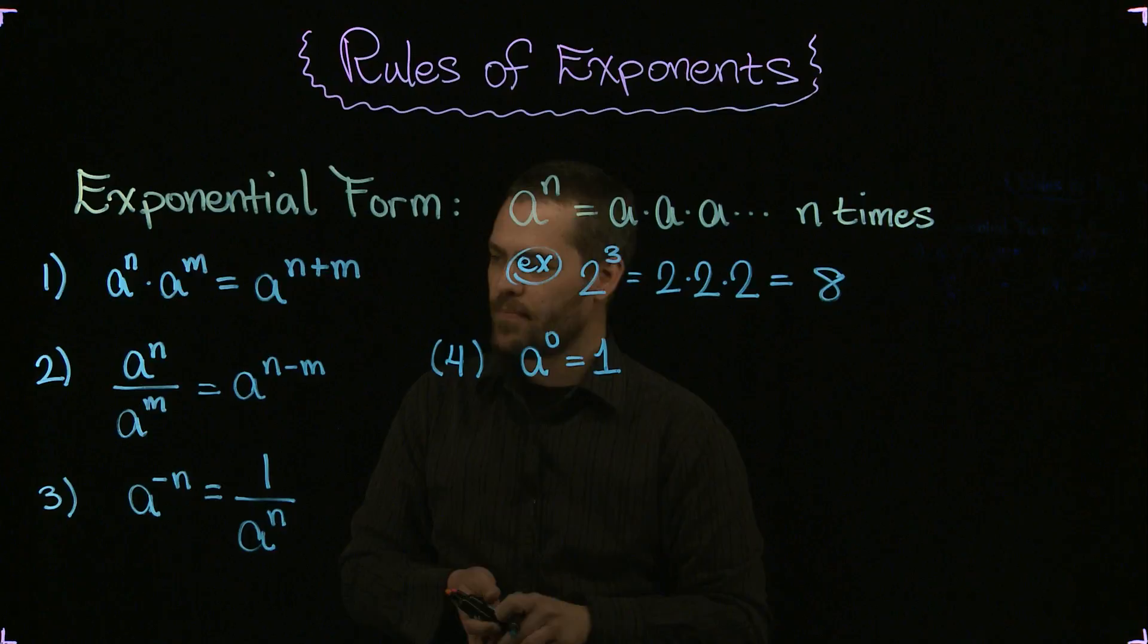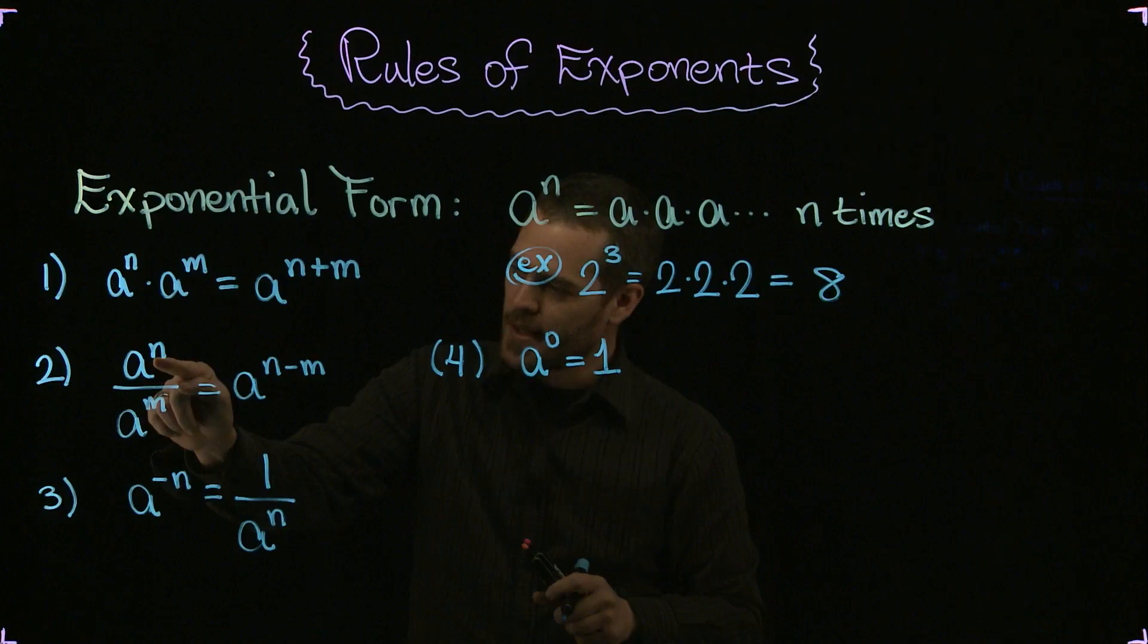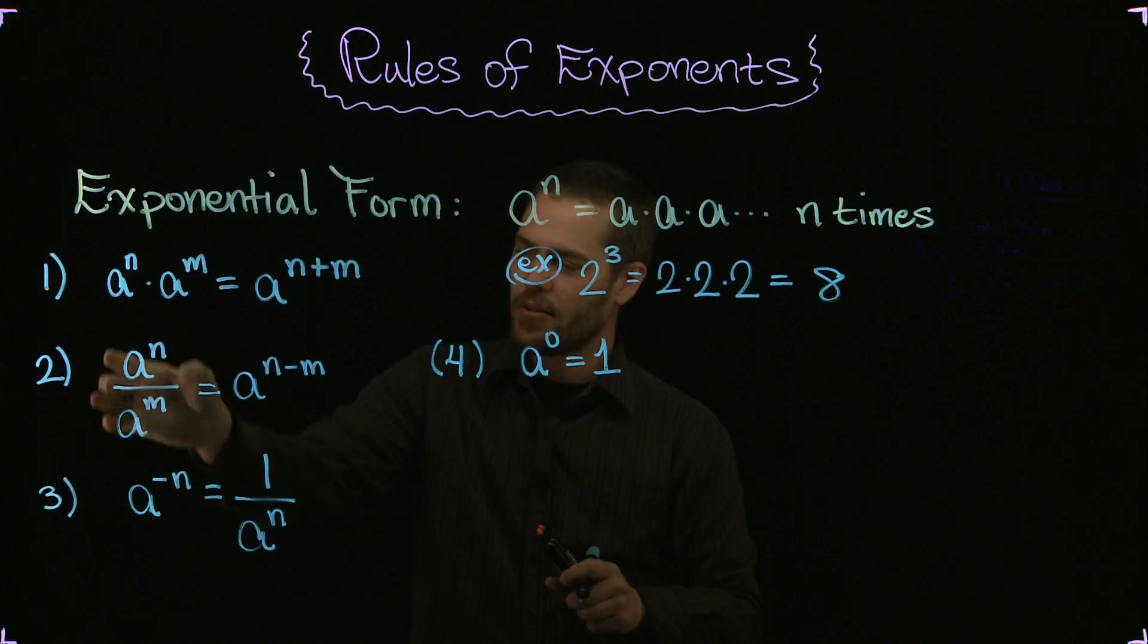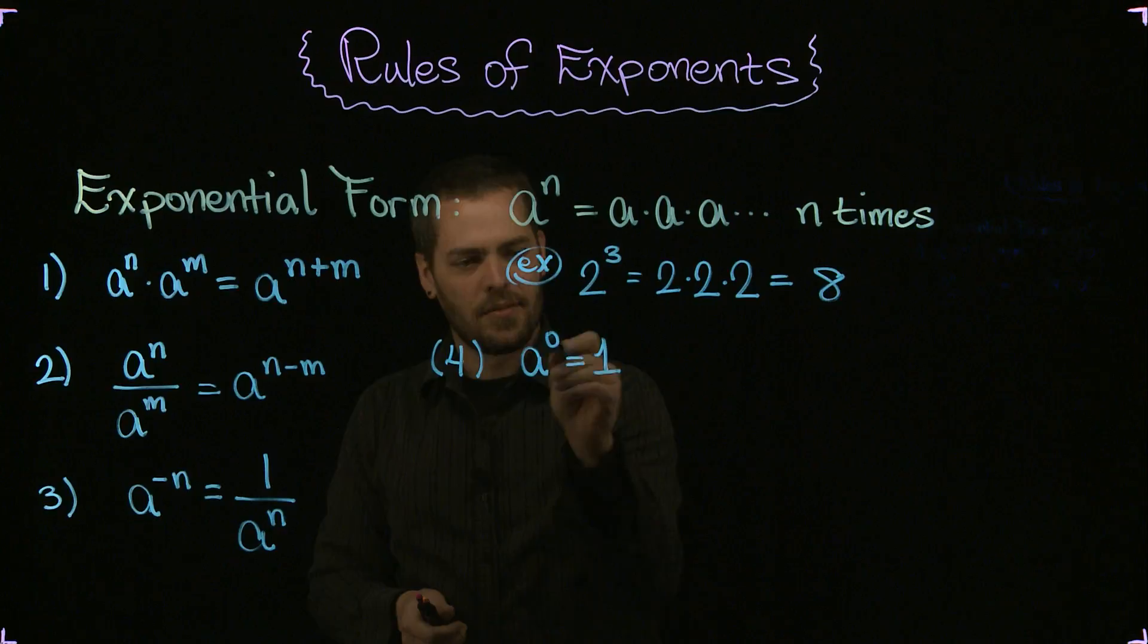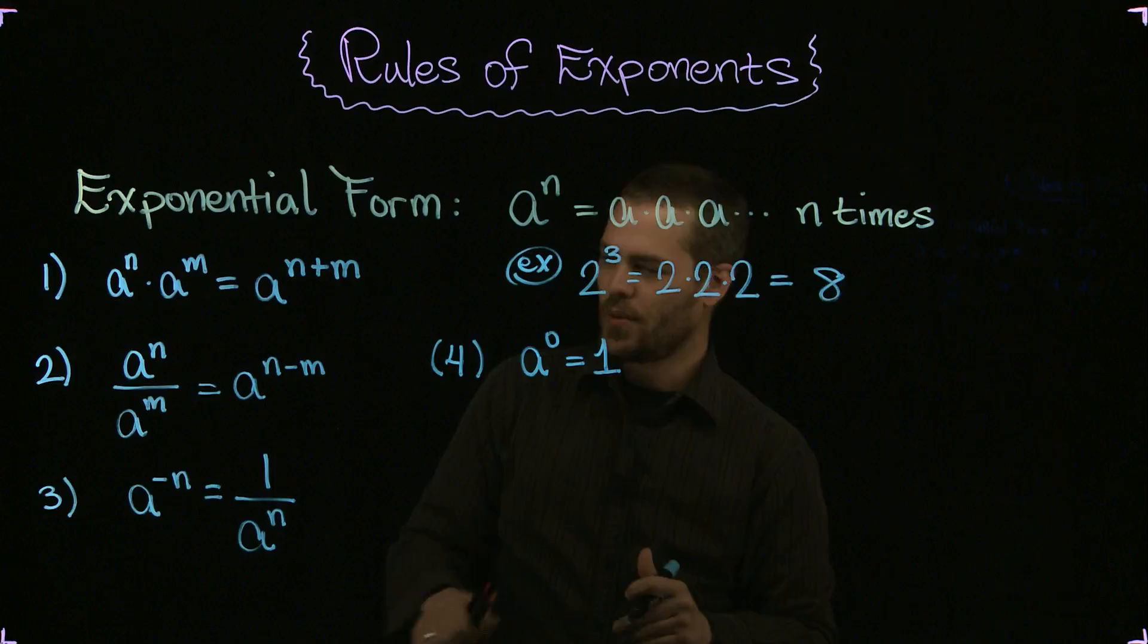Just imagine that these two things are the same, m and m. m minus m is zero. Anything over itself is one. Take a few minutes, work that out on your own, and convince yourself that indeed this one is true. a to the zero power is one. Anything to the zero power is one.